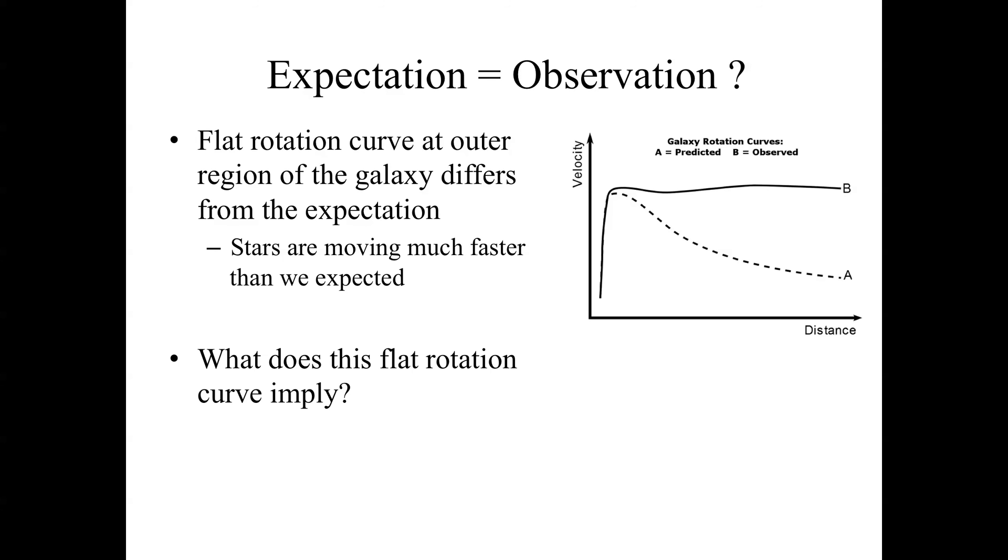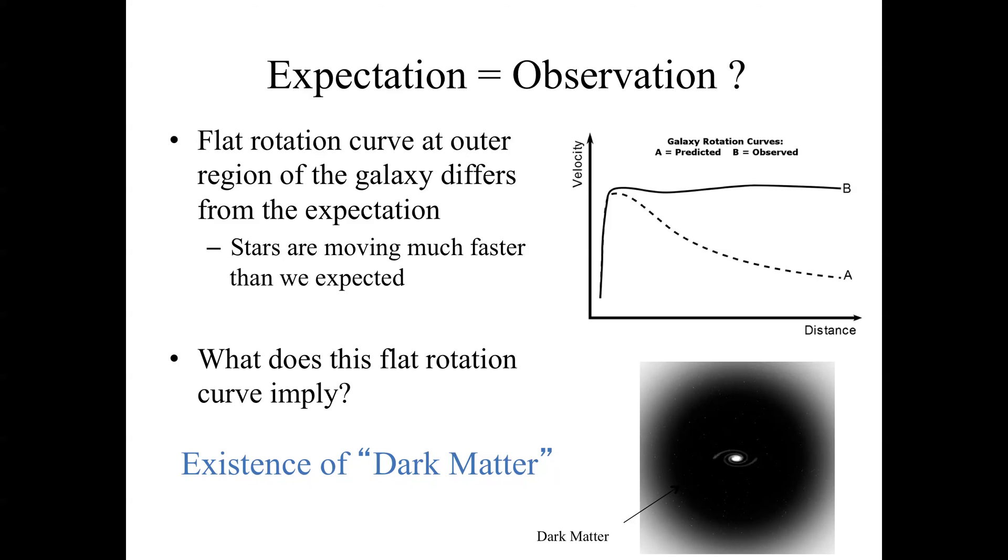When you look at the light, however, when you look at the number of stars, this becomes something of a mystery because the number of stars drops rapidly as you go out and yet the curve stays the same. This flat rotation curve then implies that there's a lot of mass that's not luminous, mass that's dark. And this is one of the first bases for the existence of dark matter in galaxies. There's a lot of matter out there that's not producing light but yet contributes to the mass as you go out in the galaxy.